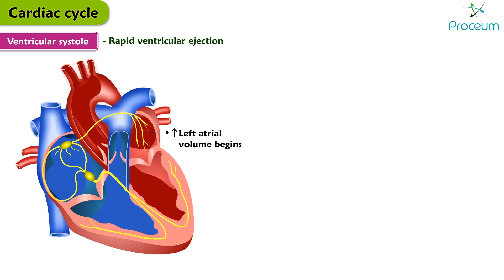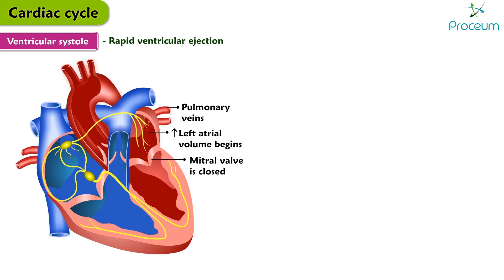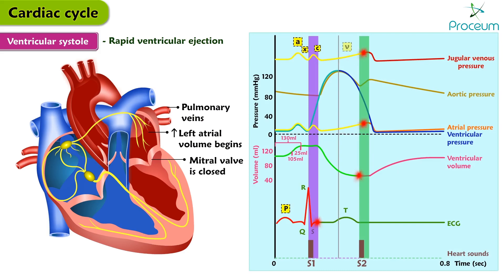The left atrial volume begins to increase as the left atrium is refilled by the pulmonary veins. Concomitantly, the left atrial pressure also begins to increase since the mitral valve is closed during refilling, which causes the V wave on JVP. On the EKG, the isoelectric ST segment and the beginning of the T wave, marking ventricular repolarization, are recorded.